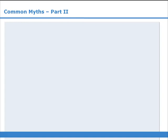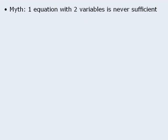In this lesson, we will examine two more common myths about data sufficiency questions. The first myth is that one equation with two variables never provides sufficient information in a data sufficiency question. Now granted, there are some cases where this rule does apply. The problem is that it does not always apply.